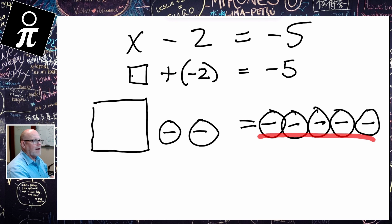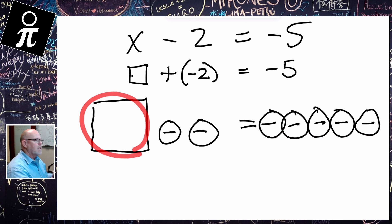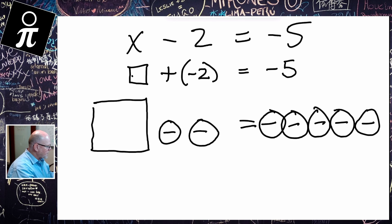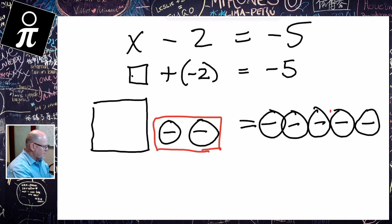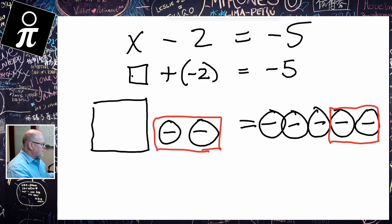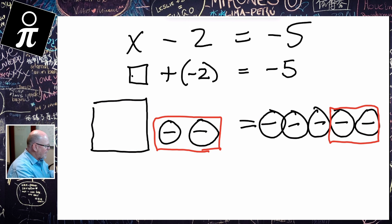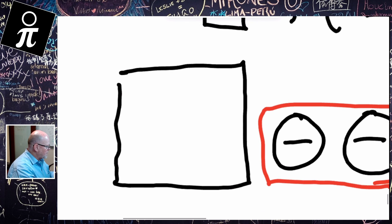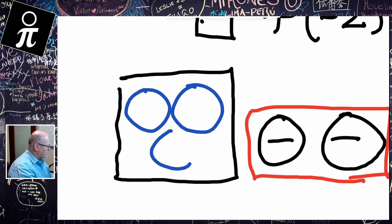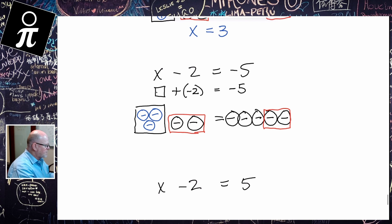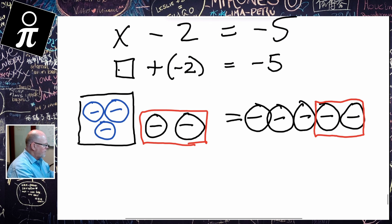On the right we've got five negatives. So what is the value of that box? Using the same approach, we see that these two negatives are kind of like partners with these two over on the right. Which means if these two sides have to be the same, then inside that box has to be three negatives. And so x has to equal negative three.